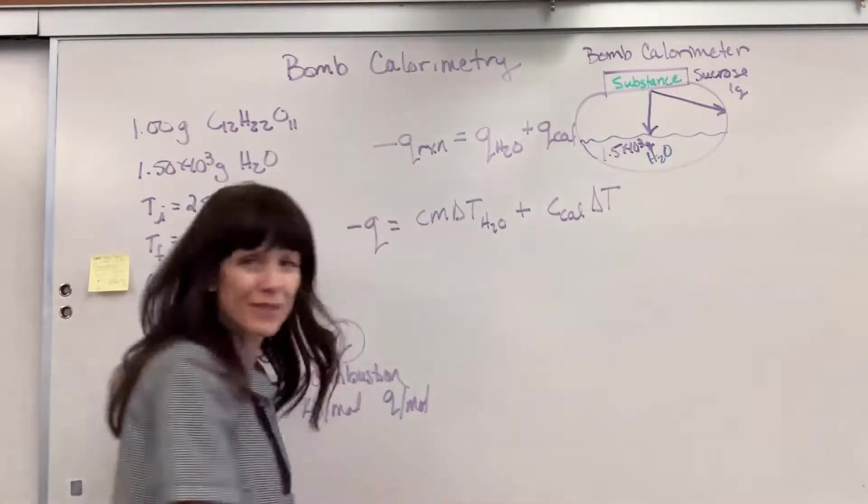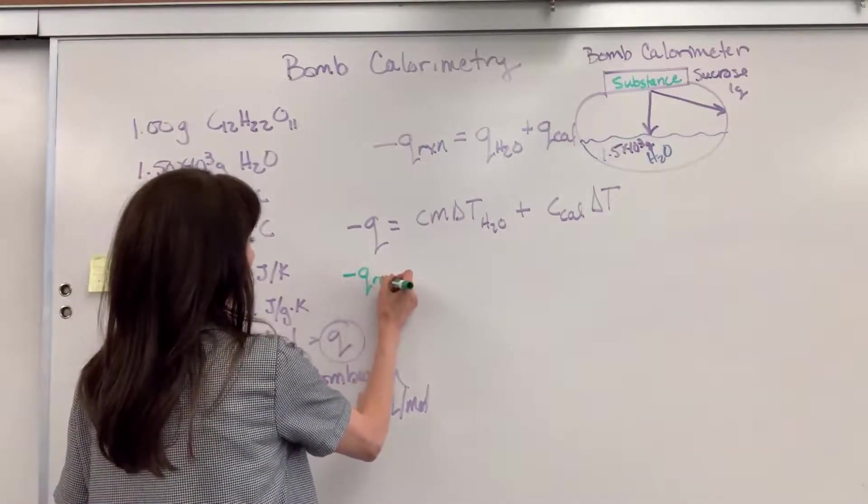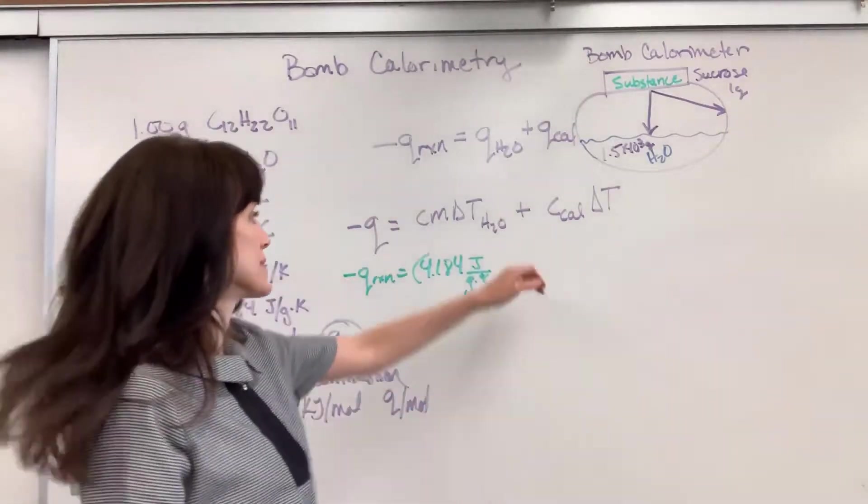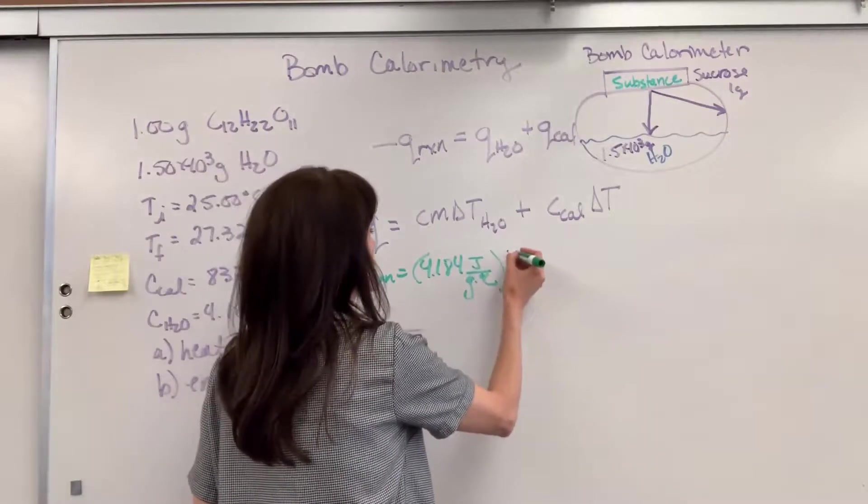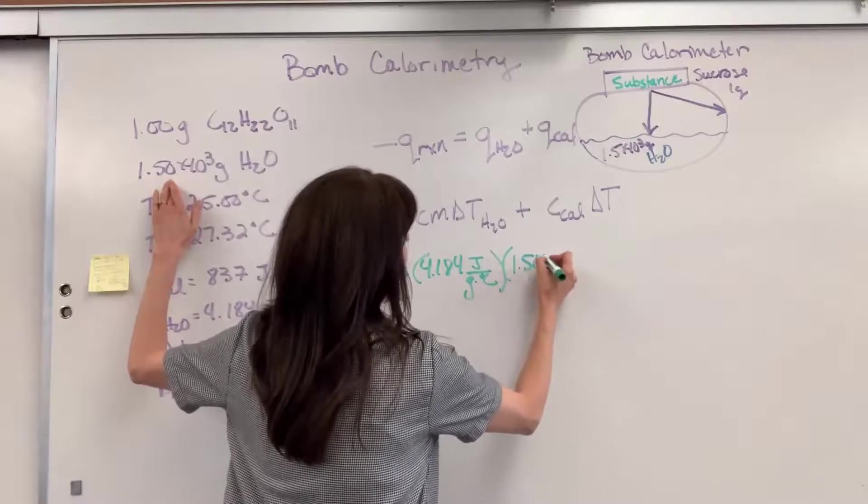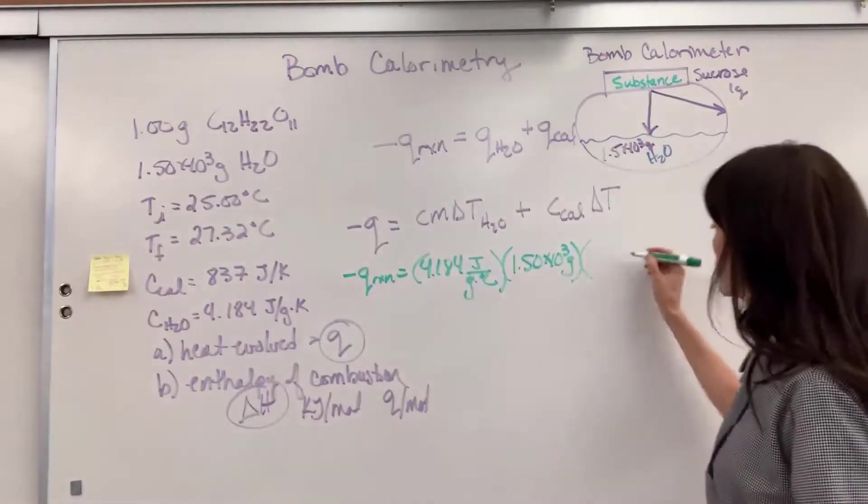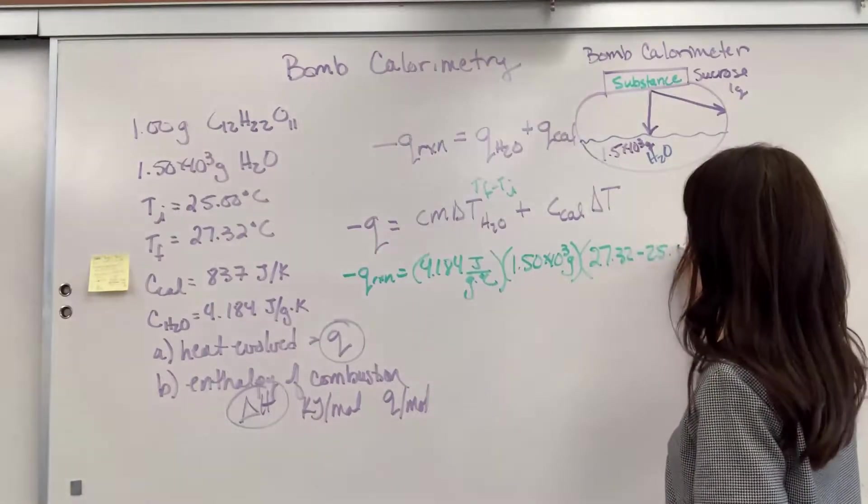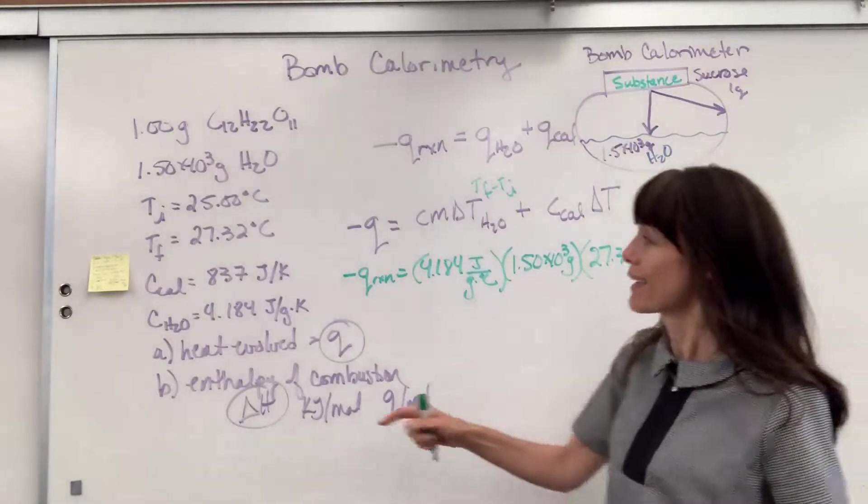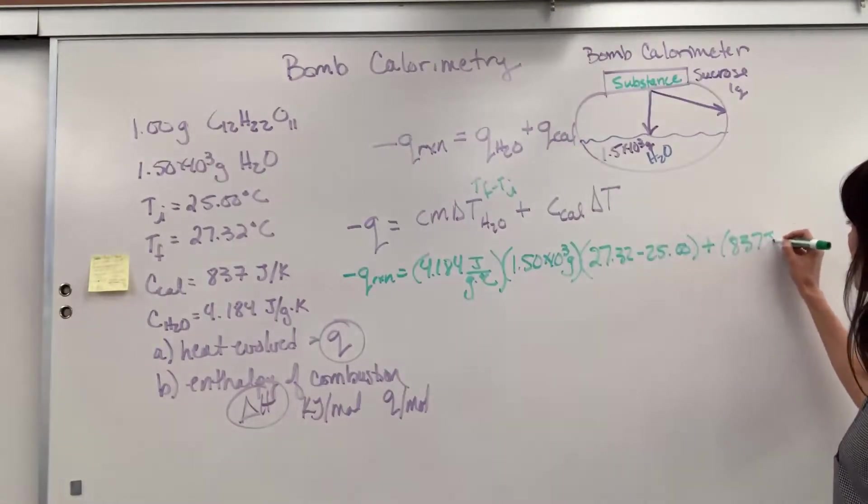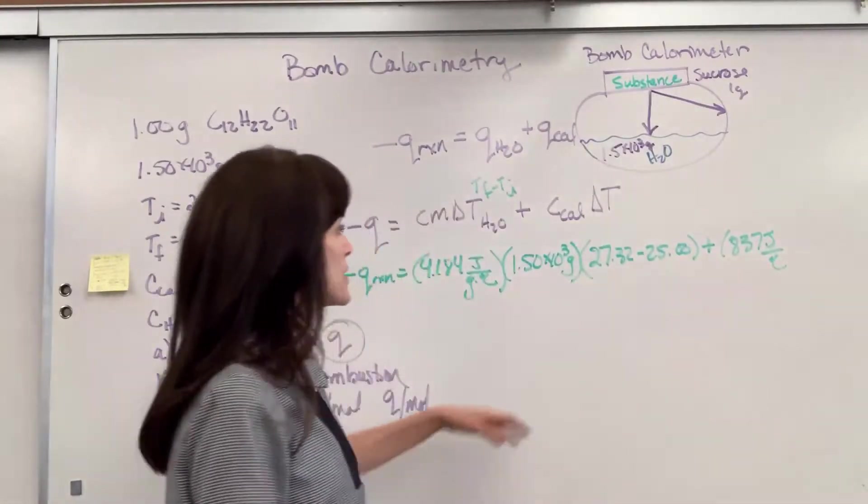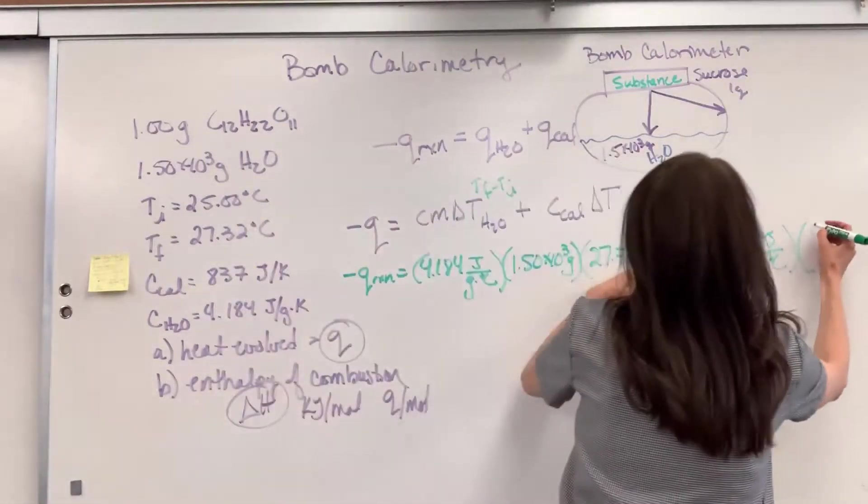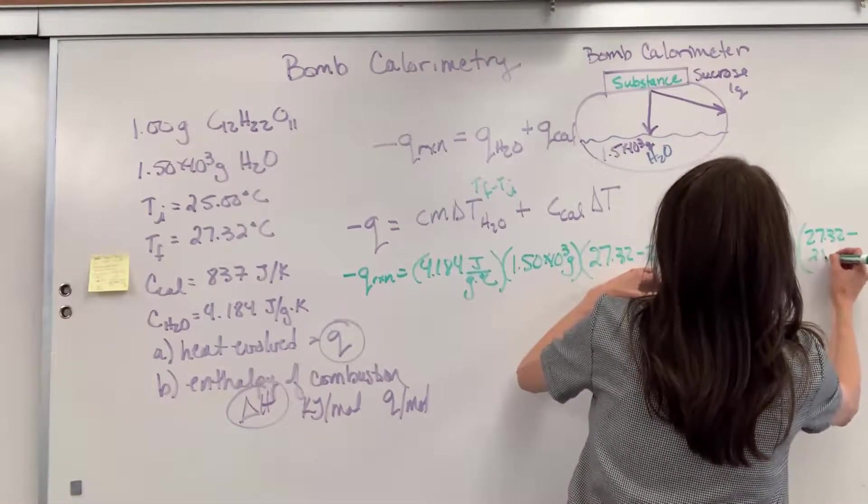Okay, so let's plug in. I'm going to change markers. It might be a little bit easier for you to see all of these numbers. So negative Q of the reaction equals specific heat of water, 4.184 joules by grams. I'm going to change that from Kelvin to degree C because I have my temperature in degree C times the mass of the water. It was big, 1.50 times 10 to the 3 grams times my temperature final. Remember this is T final minus T initial, 27.32 minus 25 plus my calorimeter constant. That is going to be 837. Again, I'm going to change it to joules over degree C because my change in temperature right here was in degree C times final minus initial is going to be 27.32 minus the 25 degree C.